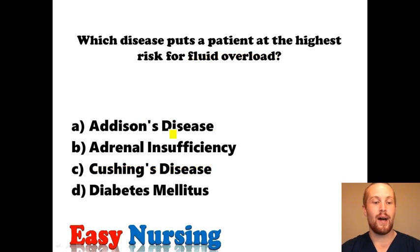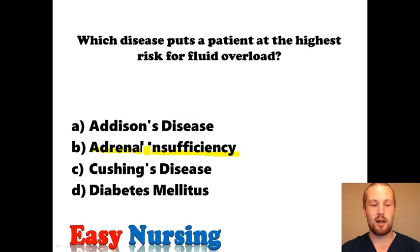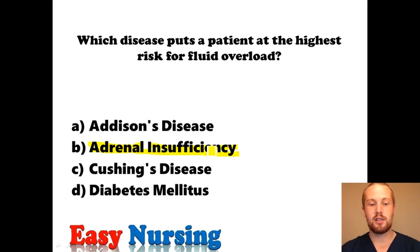Addison's disease is the opposite — not enough aldosterone, so you can't hold on to salt, you can't hold on to water, and you're extremely dehydrated. What about adrenal insufficiency? We have 'adrenal,' meaning the adrenal glands, and 'insufficiency,' meaning it's insufficiently producing its hormones. When you see adrenal insufficiency, it's the same thing as Addison's disease.